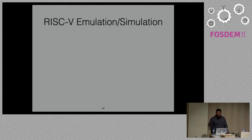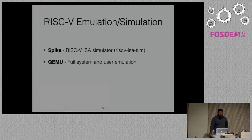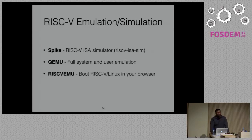Spike is the standard RISC-V simulator — also called RISC-V ISA Sim, it's the golden model. Every time a specification update is released, the changes go into Spike. In addition to Spike, there's also QEMU, which many of you are familiar with. QEMU has RISC-V support but it's not upstream yet — it supports both full system and user emulation. There's also another simulator called RISC-V EMU built by Fabrice Bellard — you can boot RISC-V Linux in your browser, which is pretty cool.